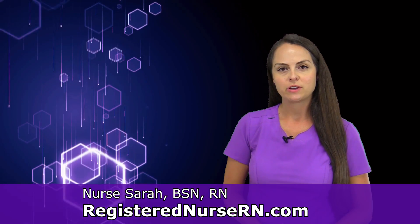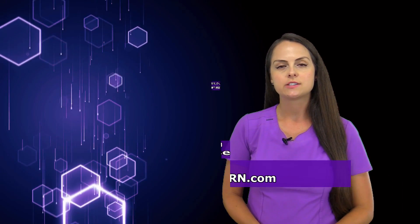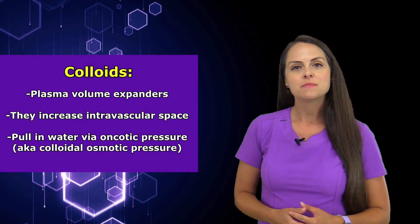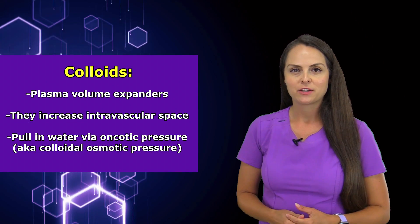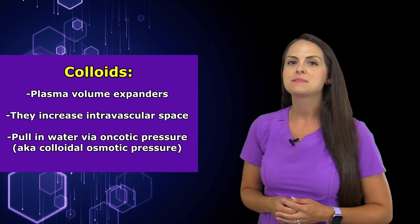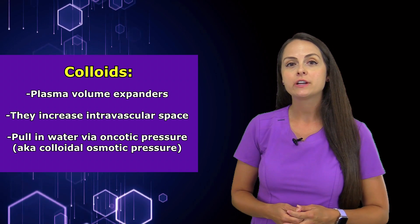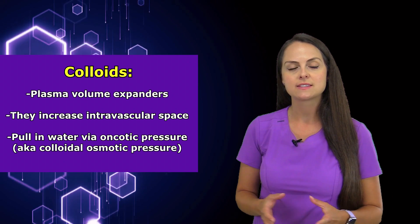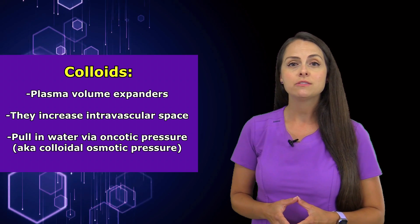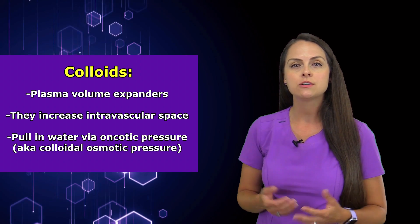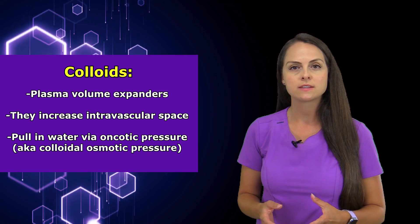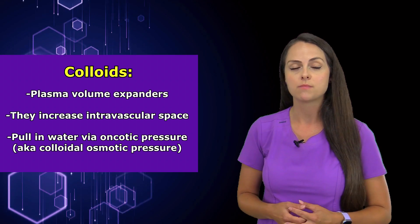Hey everyone, it's Nurse Sarah with RegisterNurseRN.com and in this video I'm going to talk about colloids. Colloids are known as plasma volume expanders and what they do is just what their name says — they increase our plasma volume, increasing that intravascular space. They do this by pulling water into this space through oncotic pressure, also known as colloidal osmotic pressure.